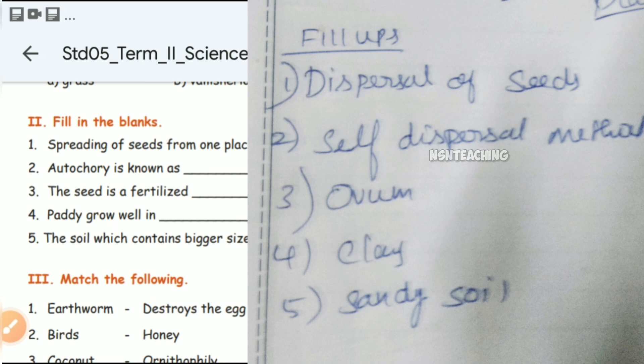The soil which contains bigger seed particles is sandy soil. The answers are: first — dispersal of seeds, second — self dispersal method, third — ovum, fourth — clay, fifth — sandy soil.